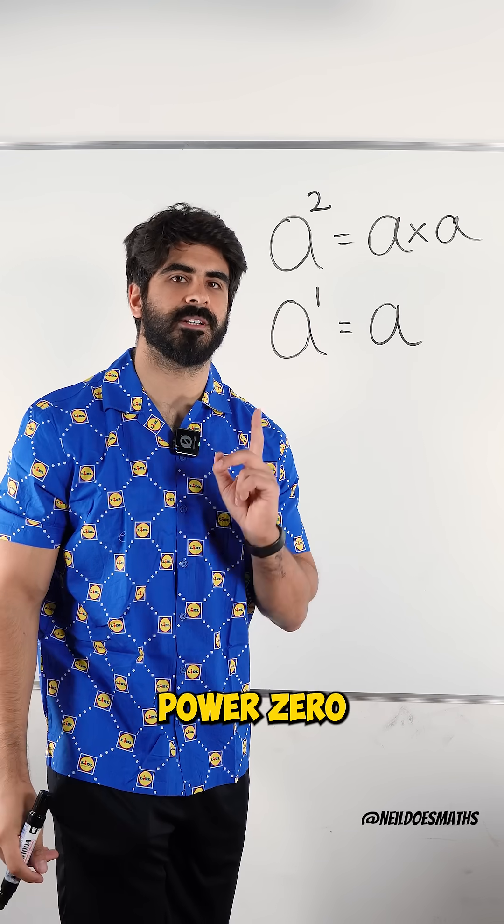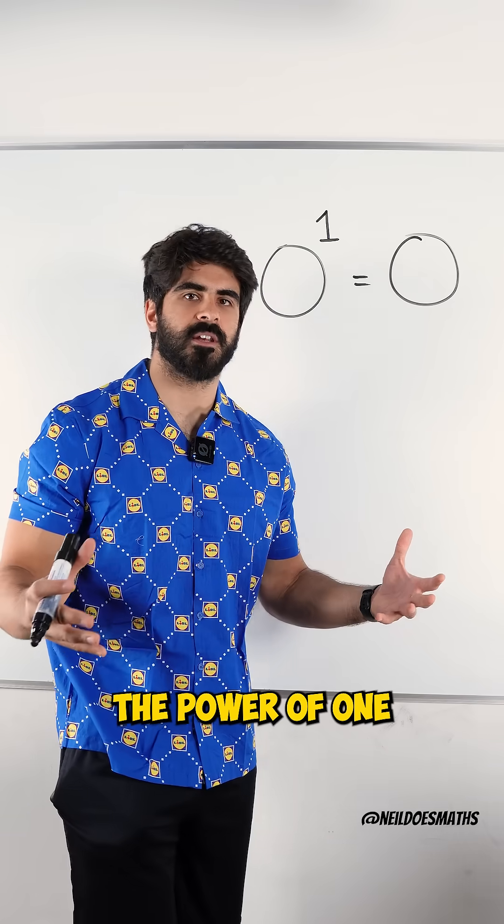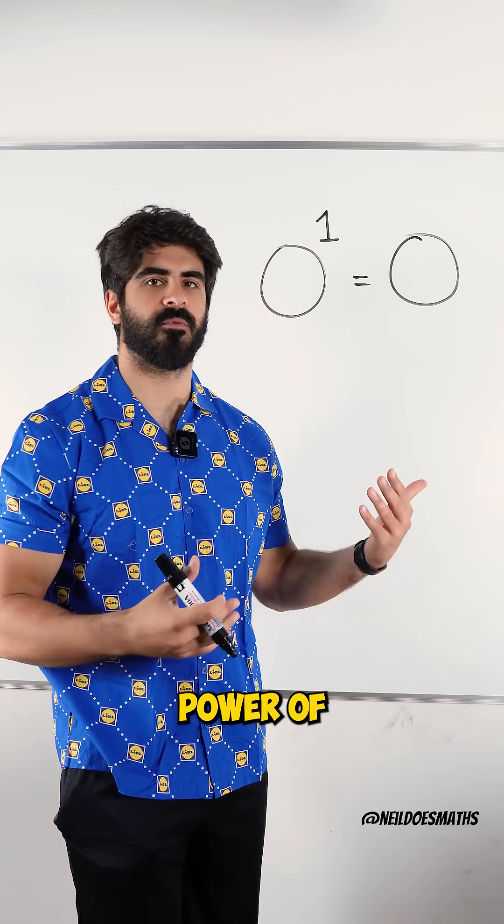But what happens when you have power zero? Now, zero to the power of one is zero, just like a to the power of one is a.